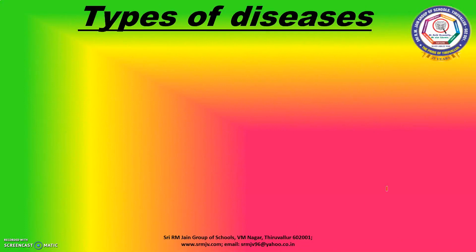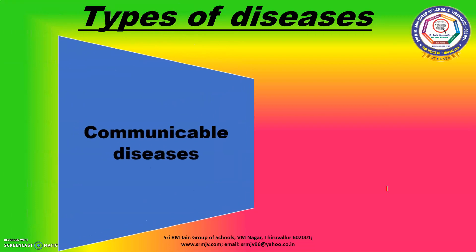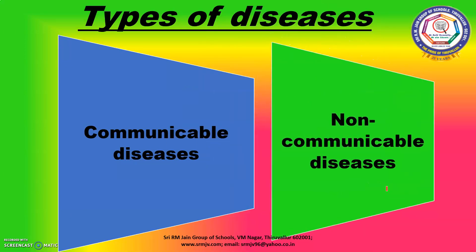Types of Diseases. Children, now we are going to learn about types of diseases. A disease is a condition when our body does not function properly. A person suffering from any disease becomes weak and feels sick. Diseases occur due to many reasons — some are caused when a particular part of the body stops functioning properly, and some are caused due to deficiency of particular minerals or vitamins, called deficiency diseases. Diseases can be commonly classified into two classes: communicable diseases and non-communicable diseases.